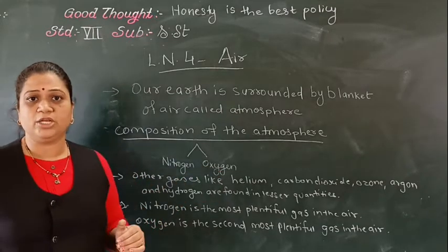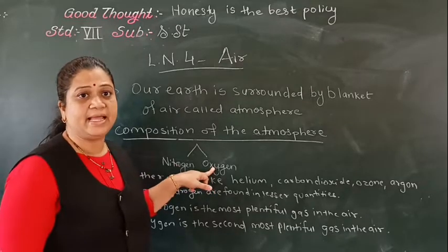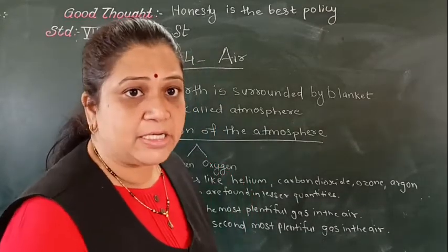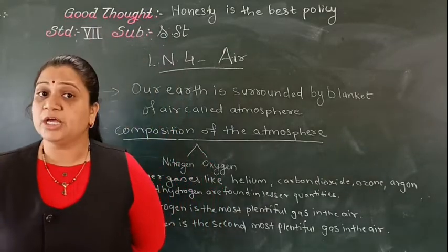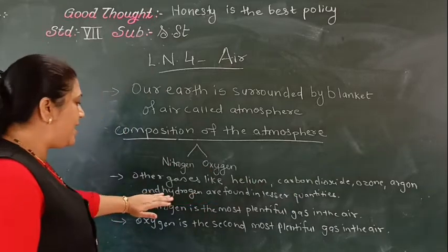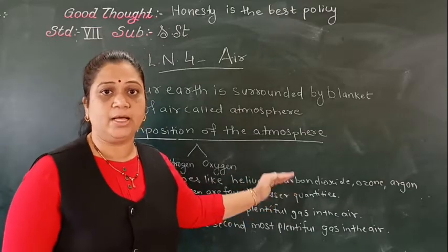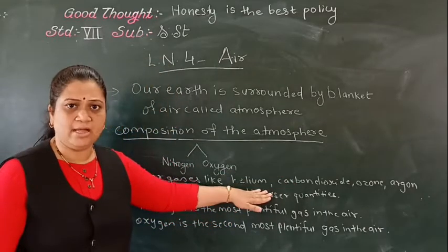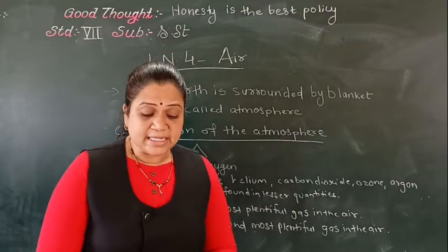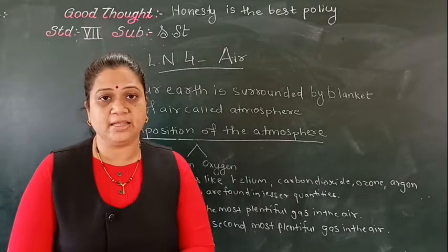You can see the diagram in your textbook. About the composition of the atmosphere, the two main gases are nitrogen and oxygen. Nitrogen is 78% of the atmosphere and oxygen is 21%. Other gases like helium, carbon dioxide, ozone, argon, and hydrogen are found in lesser quantities. There are many gases in the atmosphere but the amount of these other gases is very less.